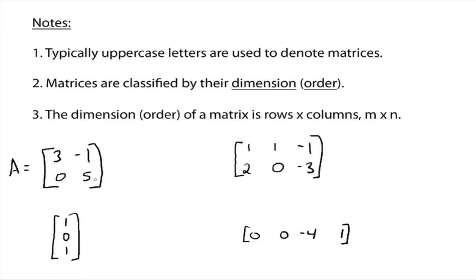So right up here, this first one, matrix A, its dimension would be a 2 by 2 because you have two rows and two columns, whereas this one over here would be a 2 by 3, two rows and three columns. And remember, it's always rows by columns.